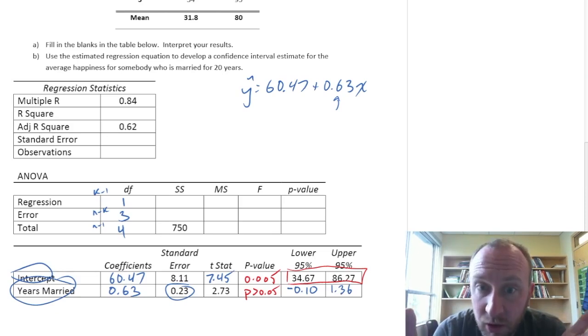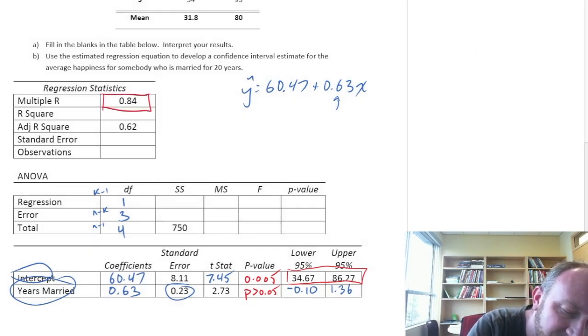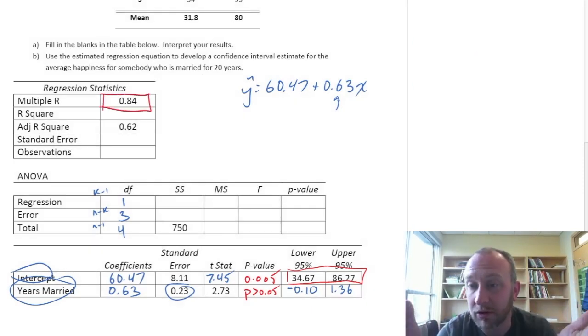So let's finish up our ANOVA table and we'll have to do our regression statistics here at the same time. Because if you look at what's there in that ANOVA output, all we have is SST and degrees of freedom. That's really not enough to do anything else with. But if we look up in the regression statistics, we do have this multiple R or this correlation coefficient.